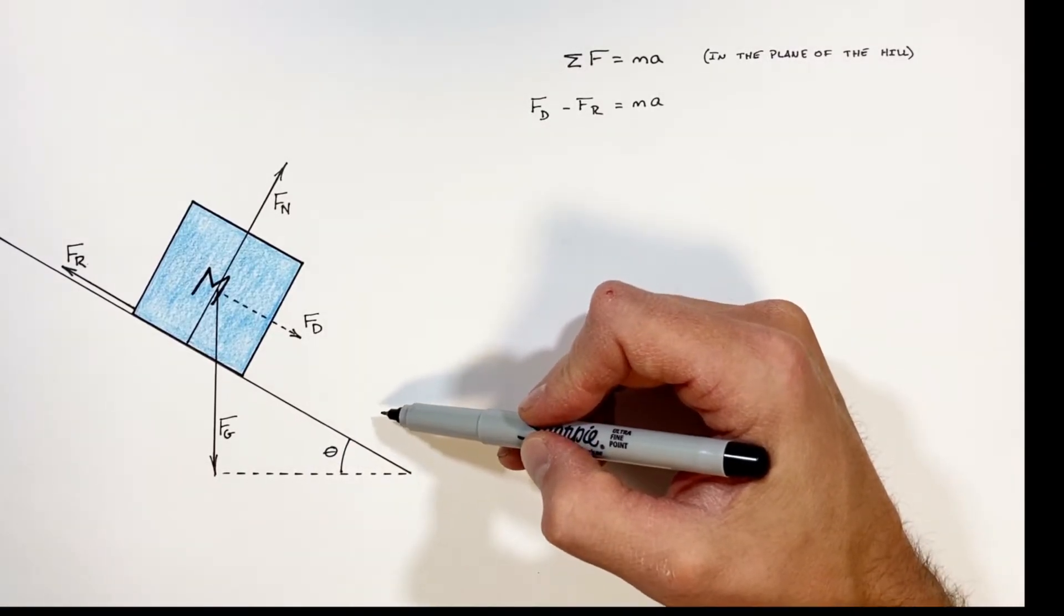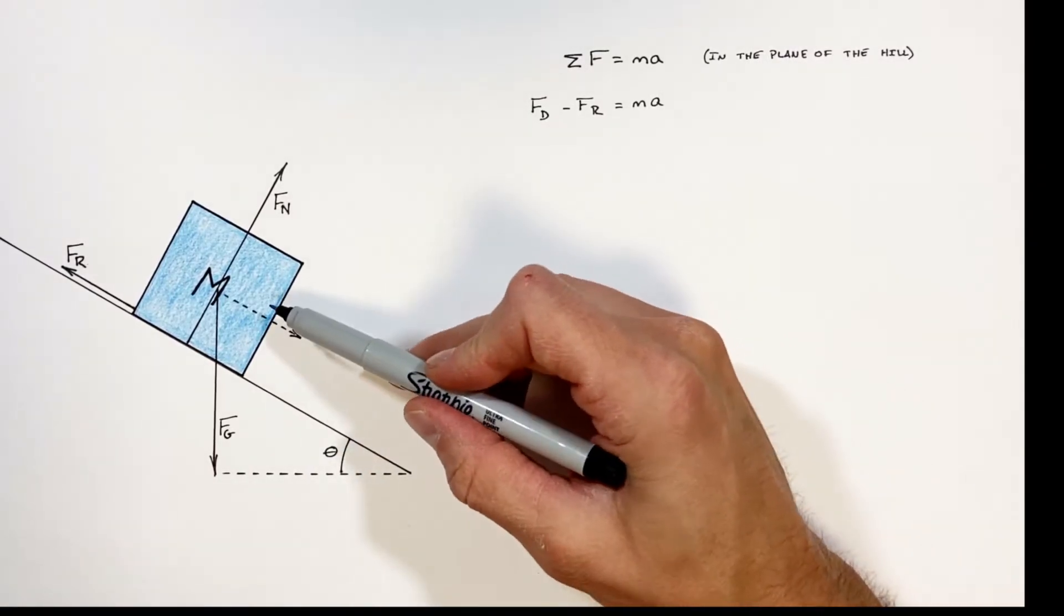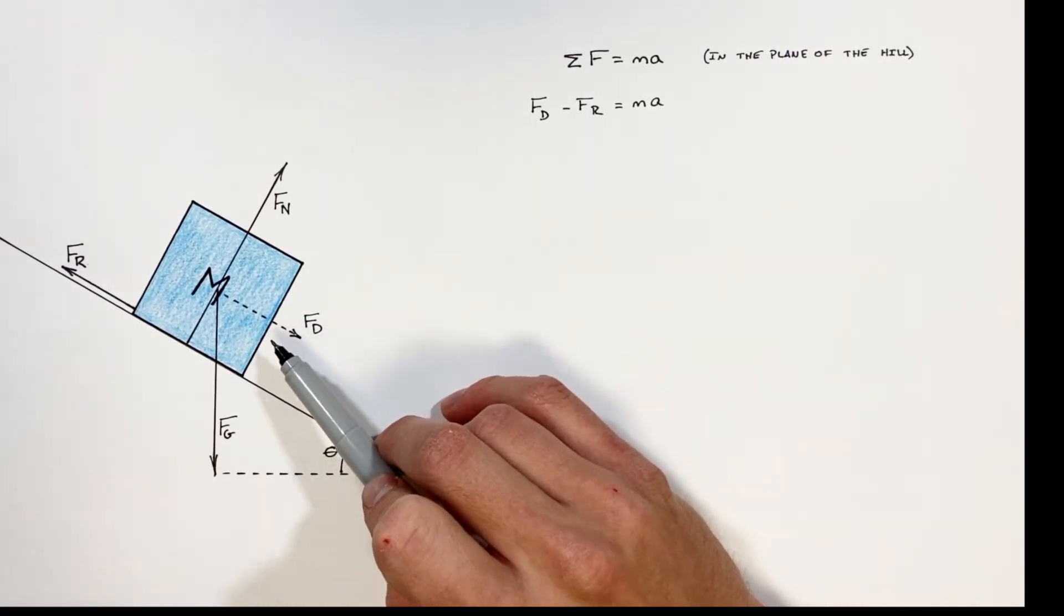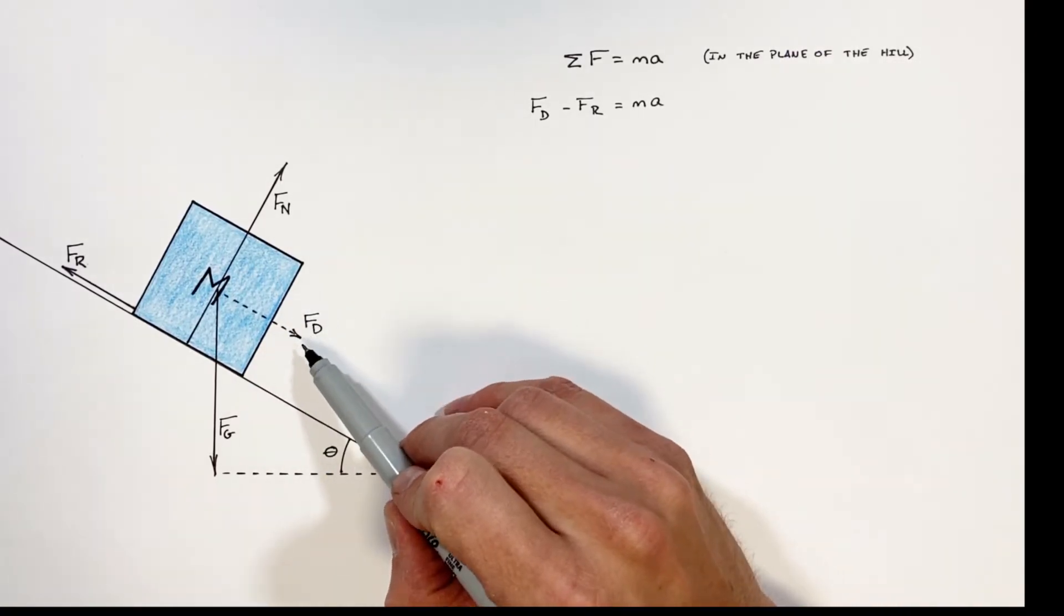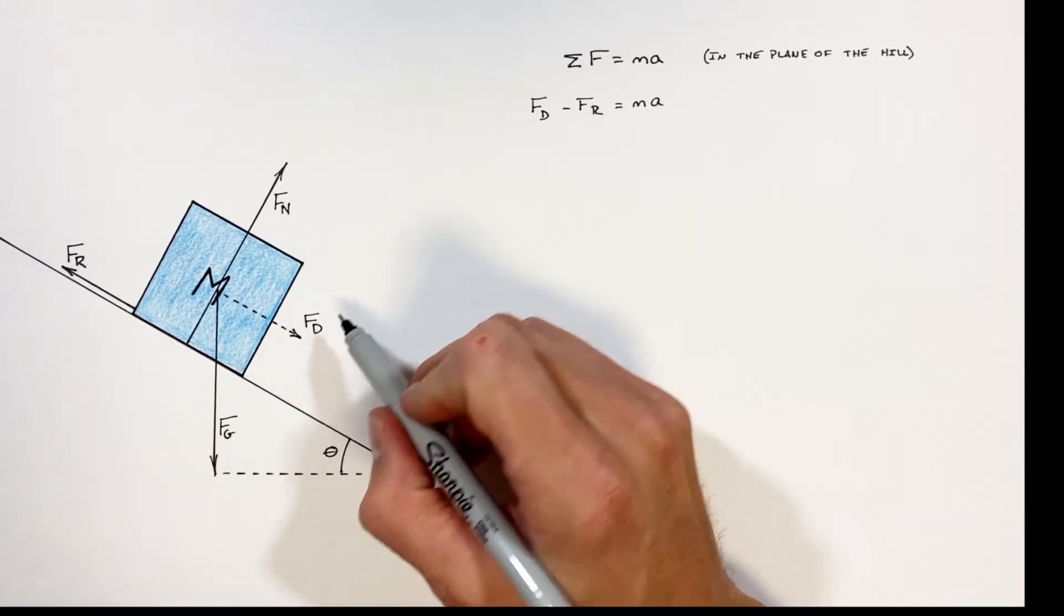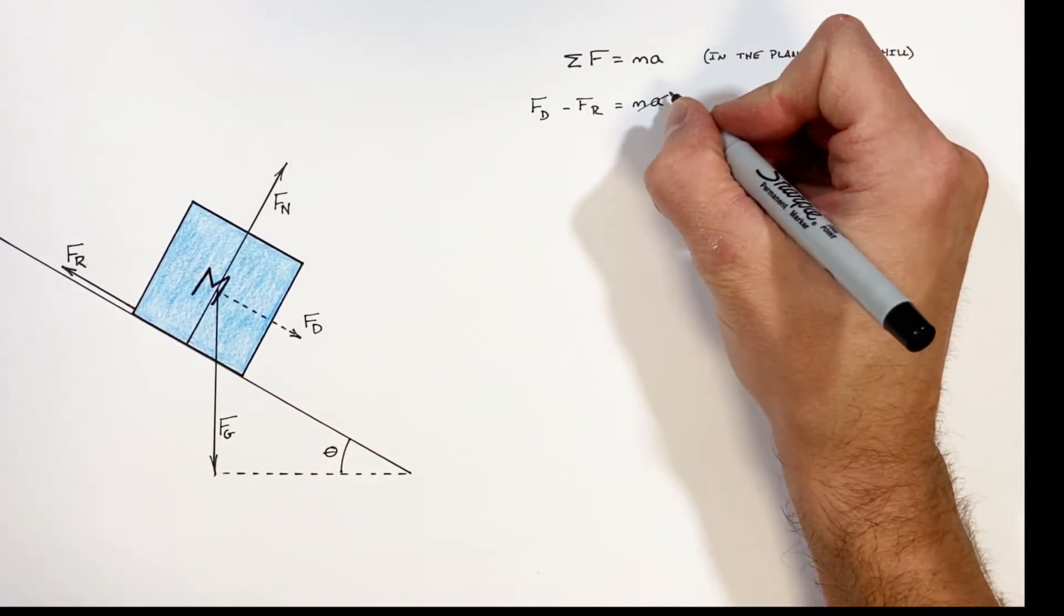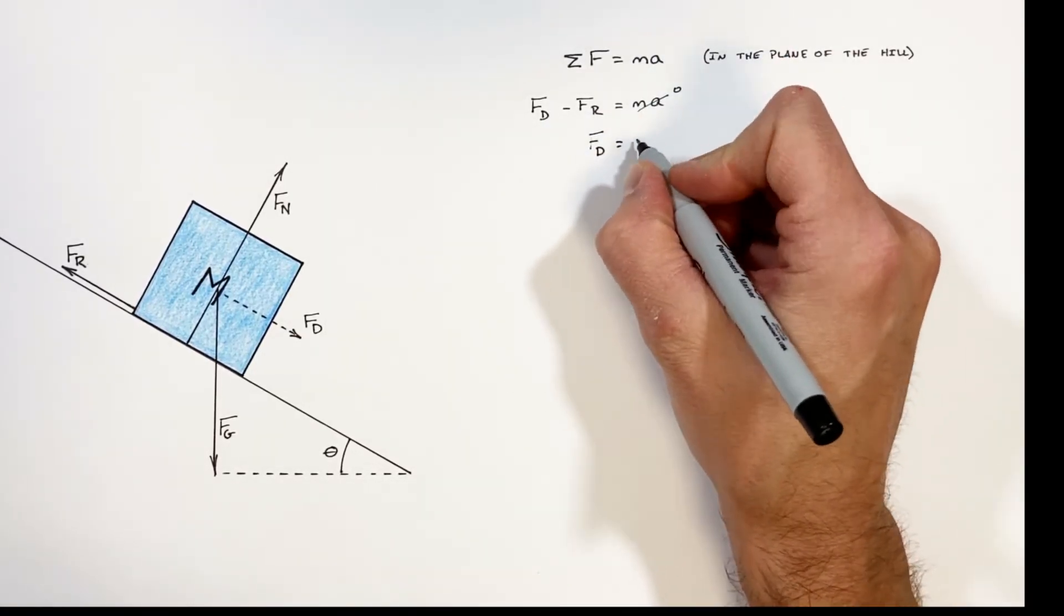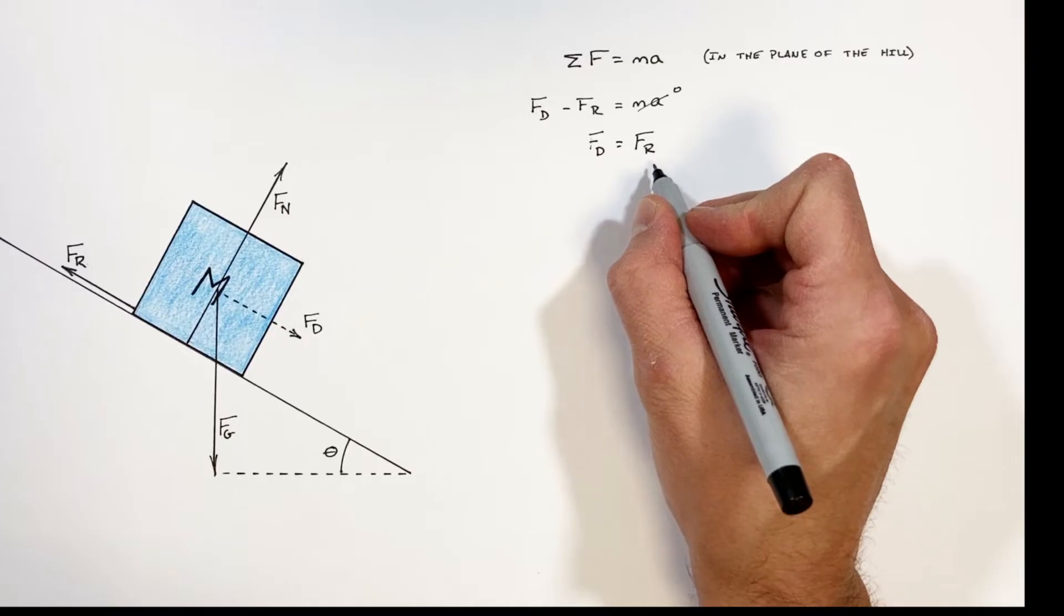Now remember, in this problem we're solving for the angle at which this block just starts to slide down the hill, or really right at that instant when static friction breaks free and it becomes kinetic, and right at that moment the acceleration is zero. So ultimately what this means is our force down the hill is equal in magnitude to the friction force.